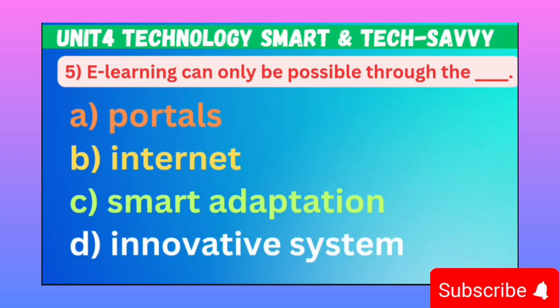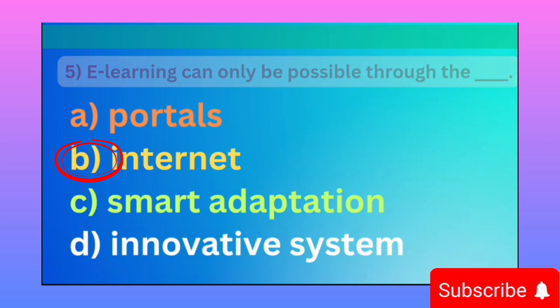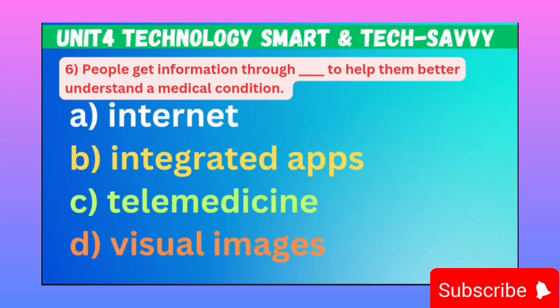MCQ number five: E-learning is only possible through dash-dash. Option A: Portal. B: Internet. C: Smart adaptation. D: Invent system. Correct option is B, Internet. MCQ number six: People get information through dash-dash to better understand medical conditions. Option A: Internet. B: Integrated. C: Telemedicine. D: Visual images. Correct option is C, Telemedicine.